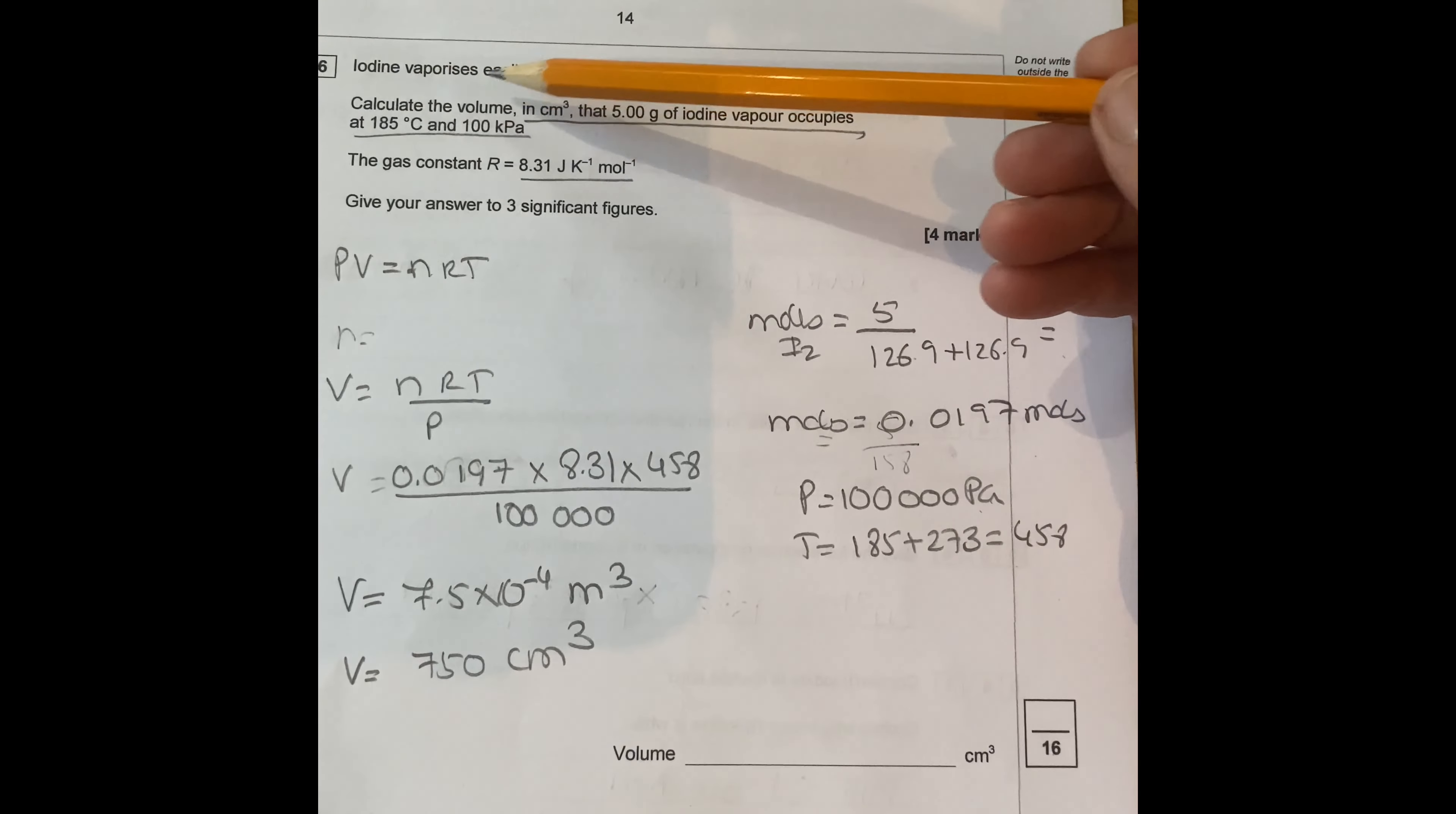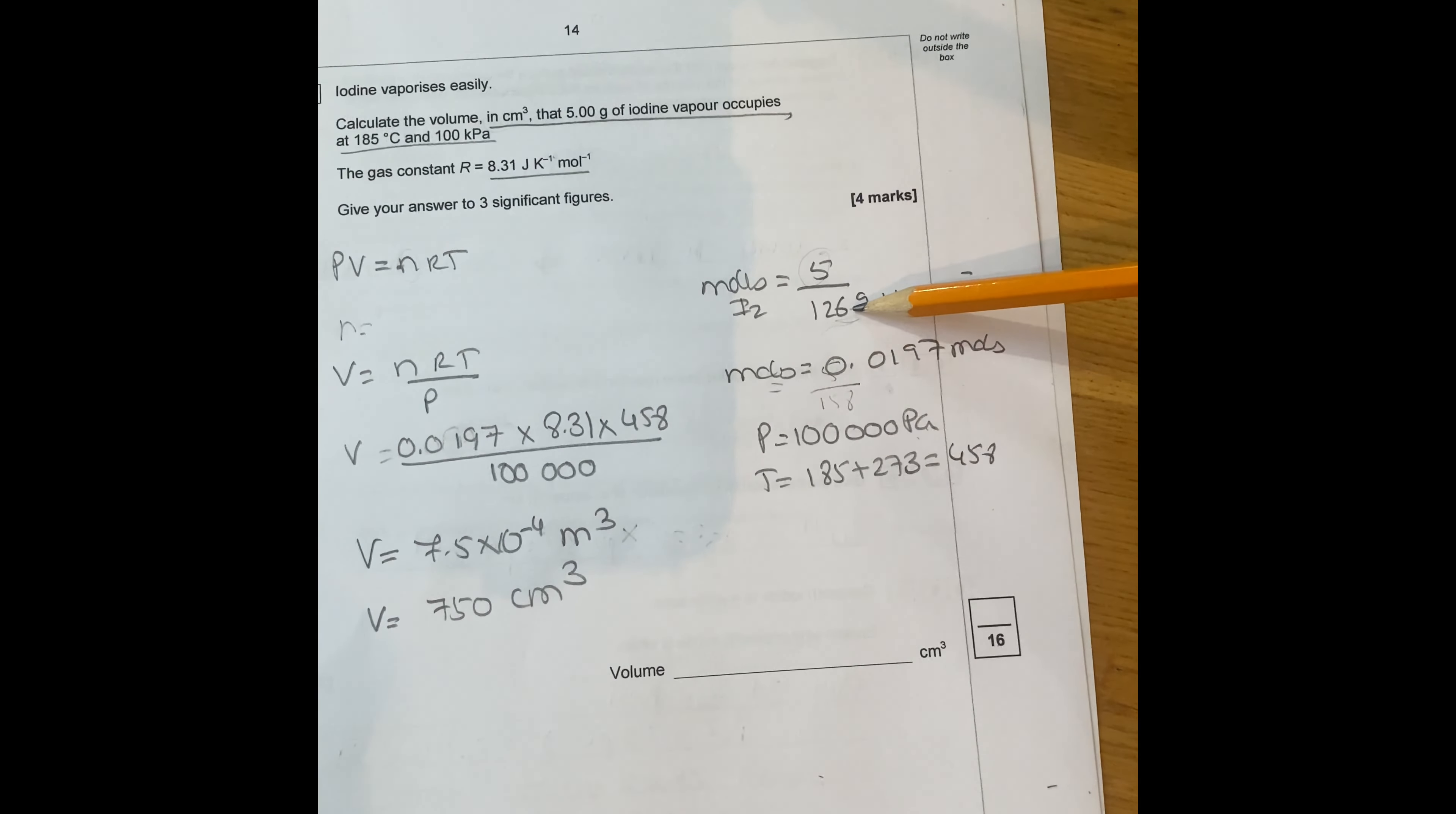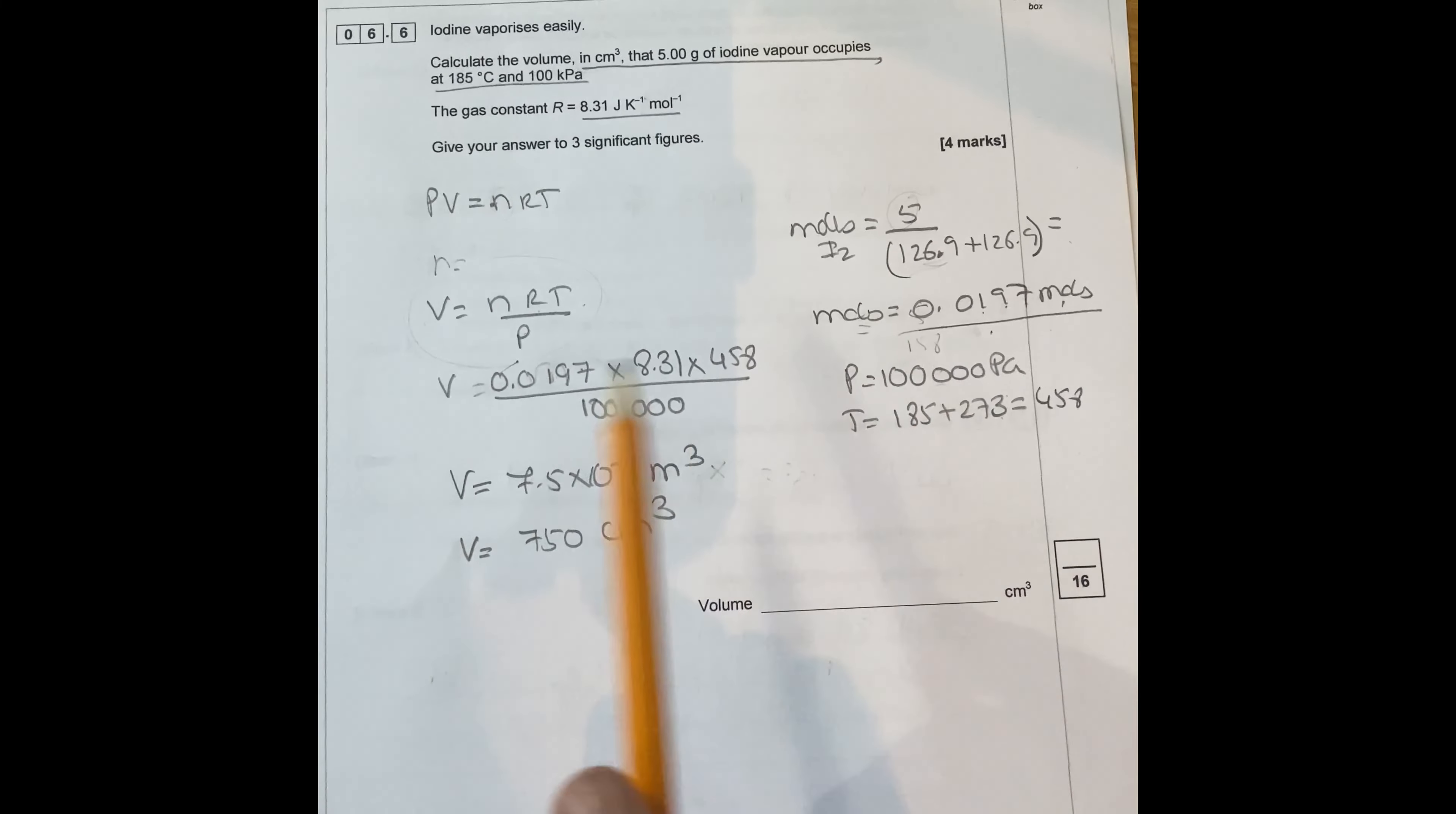Question 6.6. Iodine vaporizes easily. Calculate the volume in centimeters cubed of five grams of iodine vapor occupies at 185 Centigrade and 100 kPa. Gas constant is this one here. So give your answer three sig figs. So what first we do, we got PV equals NRT. We need moles. We know grams and we know iodine is 126.9. So you add that at two. It gives you 253.8 for that one there. So the answer will be 0.0197 moles.